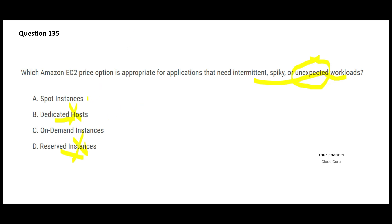With spot instances, the problem is that the instance may go away — it's a temporary kind of resource. Just like eBay, the moment someone bids higher than you, you lose your spot instance. If you lose your spot instance, how will you handle spiky and unexpected workloads? Suppose an unexpected workload comes exactly when you lose your instance — everything stalls and you have to wait for a new instance to be acquired.